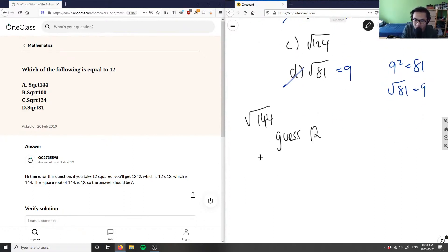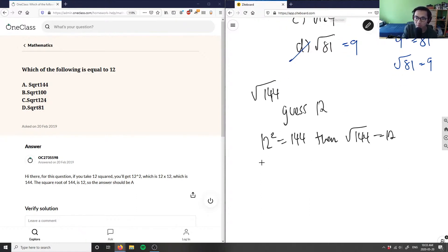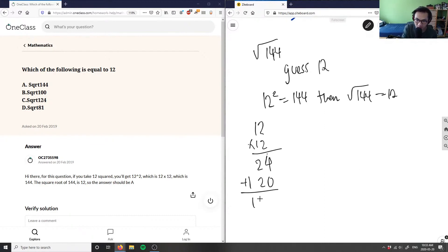And then we can just do 12 squared. If 12 squared equals 144, then square root of 144 equals 12. So we want to solve for 12 squared, so 12 times 12. So 2 times 2 is 4, 2 times 1 here is 2. I add a 0, and I say 2 times 1 here is 2, 1 times 1 here is 1. I add those guys together. I would get 144.